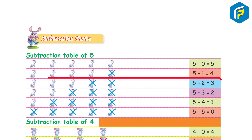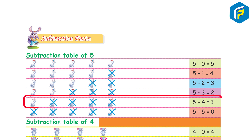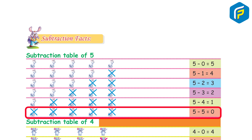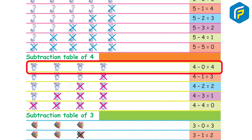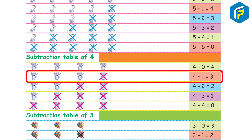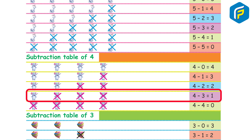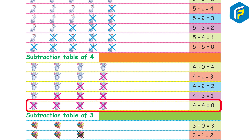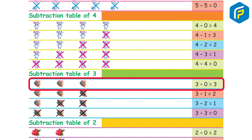Subtraction table of 5: 5 minus 0 is equal to 5. 5 minus 1 is equal to 4. 5 minus 2 is equal to 3. 5 minus 3 is equal to 2. 5 minus 4 is equal to 1. 5 minus 5 is equal to 0. Subtraction table of 4: 4 minus 0 is equal to 4. 4 minus 1 is equal to 3. 4 minus 2 is equal to 2. 4 minus 3 is equal to 1. 4 minus 4 is equal to 0.